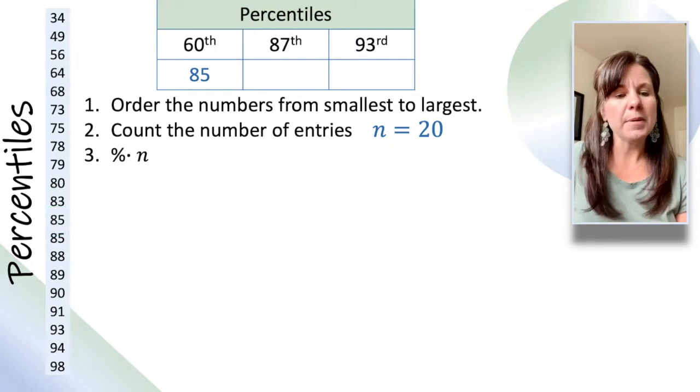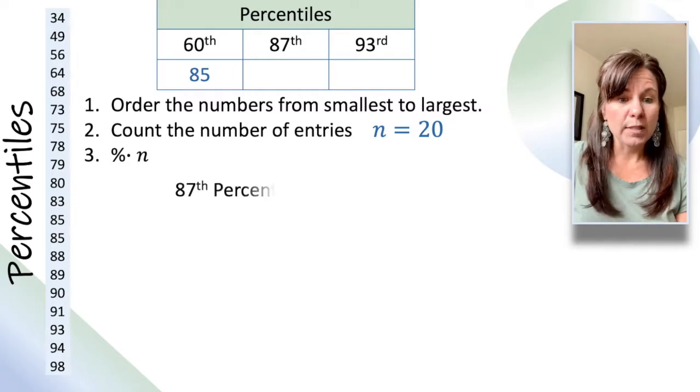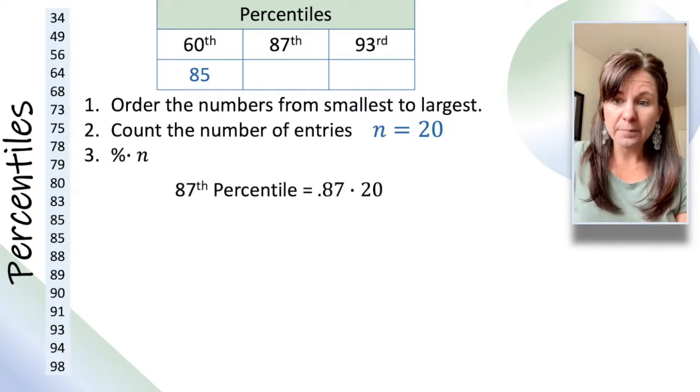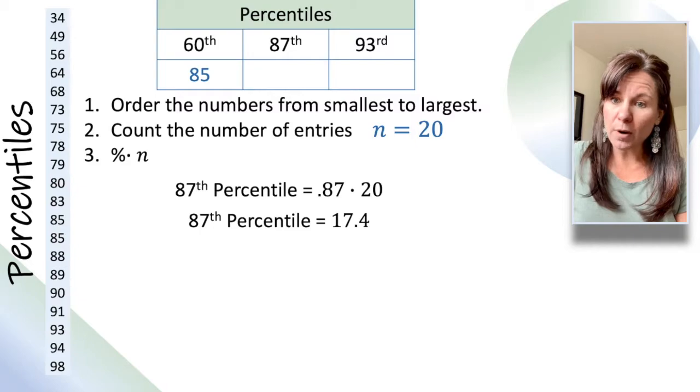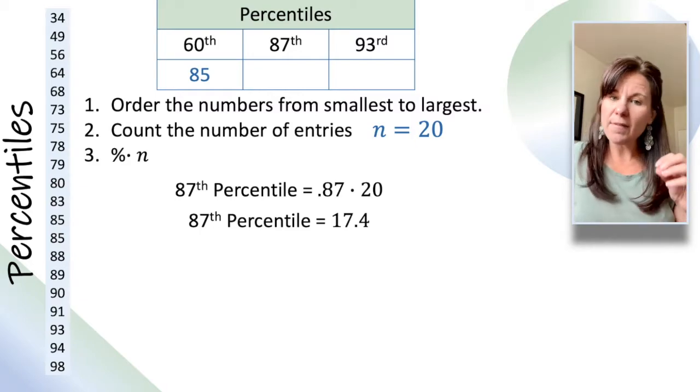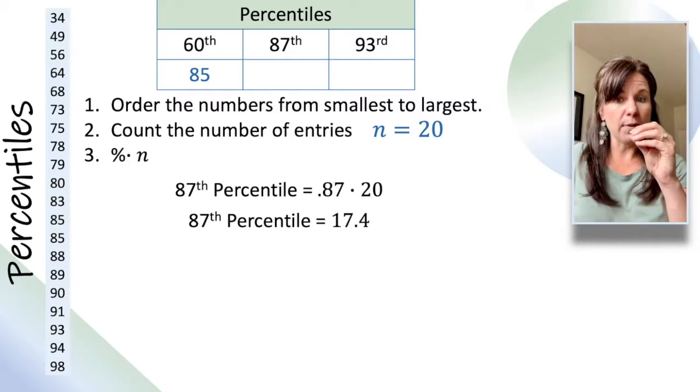87th percentile. Let's try that one. Same process. We take 0.87 times 20, and we get 17.4. Now, normally, if you have anything 0.5 or above, you round up. Anything below 0.5, you round down.